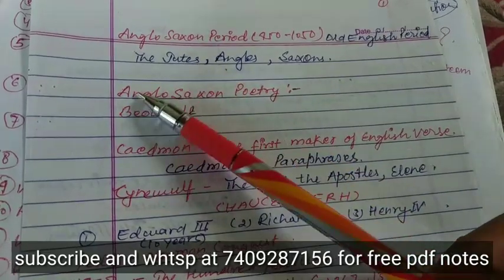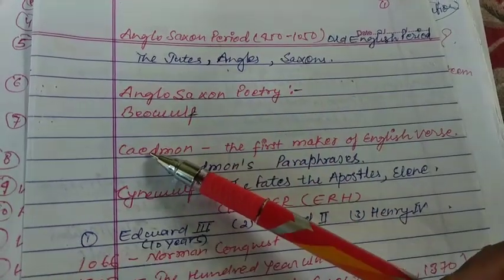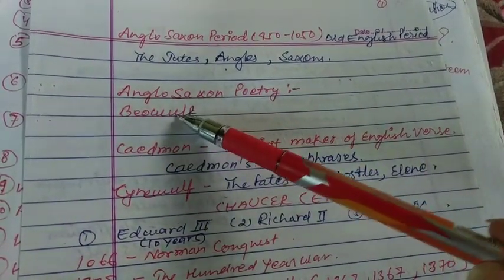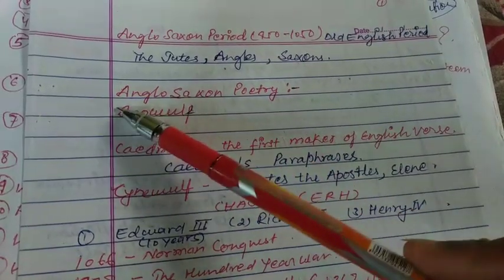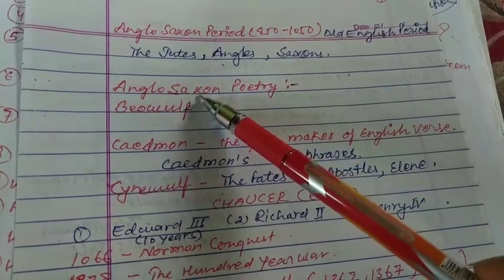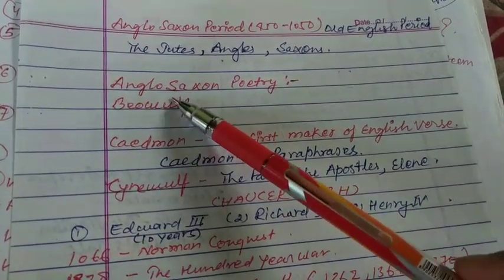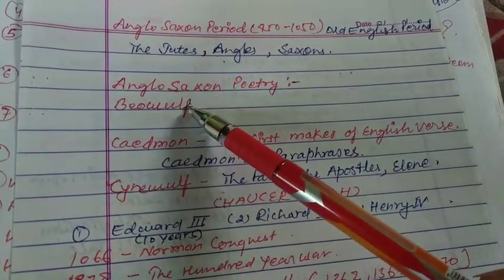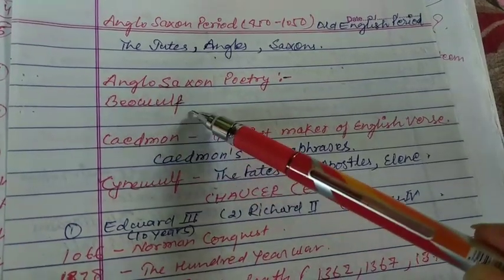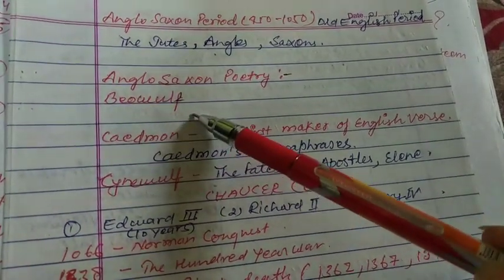The Jutes, Angles, and Saxons were tribes in the Anglo-Saxon period. The famous Anglo-Saxon poetry was Beowulf — that was the old poetry written at that time. We don't know who wrote it and we don't have any idea about the author's name. The poem is named Beowulf because the hero's name was Beowulf.